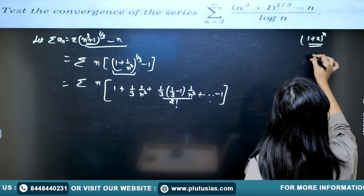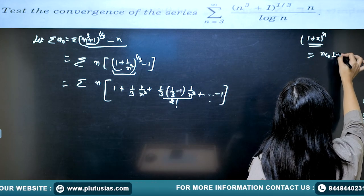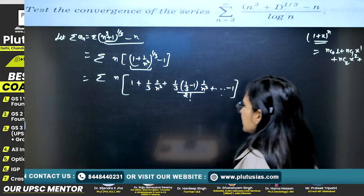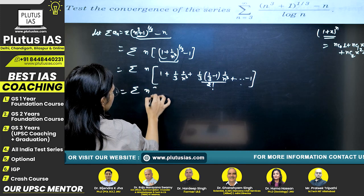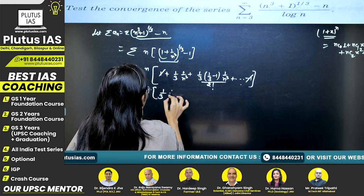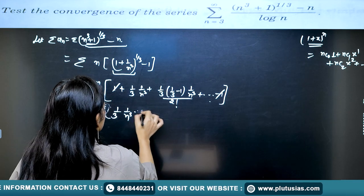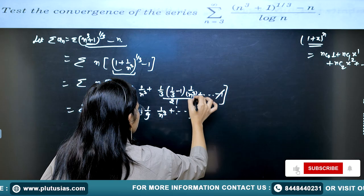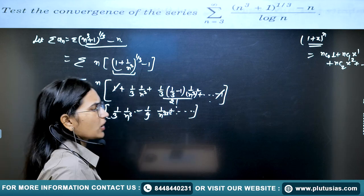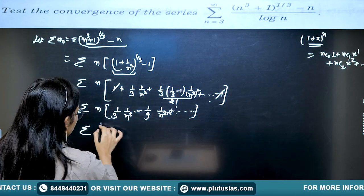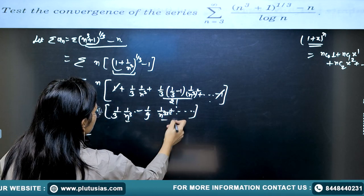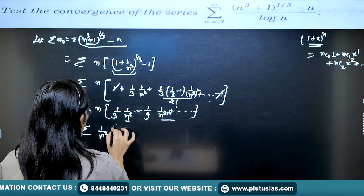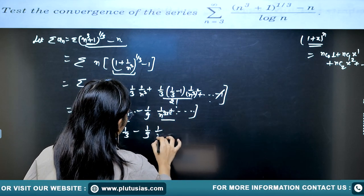Applying the binomial expansion (1+x)^n = nC0·1 + nC1·x + nC2·x² + …, the '1' terms cancel, giving n · [(1/3)(1/n³) + (1/3)(1/3 − 1)(1/n³)²/2! + …]. After simplification, the n outside compensates one power, yielding summation of the form (1/3)(1/n²) − (1/9)(1/n³) × … and so on, with 1/n² being the dominant term.